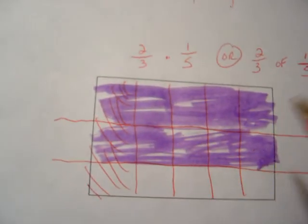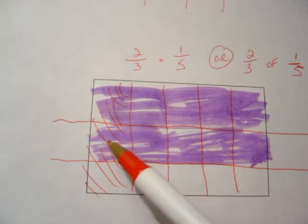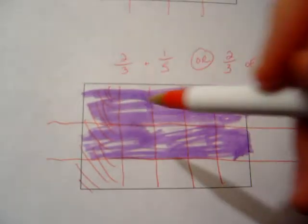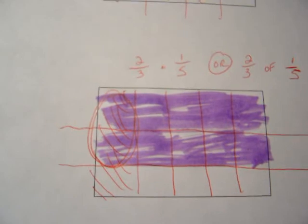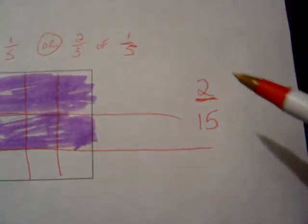And how many of those got double shaded red pen and purple? 1, 2, just 2. So, really, if we're taking 2 thirds of 1 fifth, we're only taking this much. Okay? It's a very small portion. When you take 2 thirds times 1 fifth, the answer is smaller, it's 2 fifteenths.